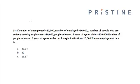If the number of unemployed is equal to 20,000, the number of employed is equal to 50,000, the number of people who are actively seeking employment is equal to 10,000, the people who are 16 years of age or older is equal to 120,000, and the number of people who are 16 years of age or older but living in an institution is equal to 20,000 — what is the unemployment rate?